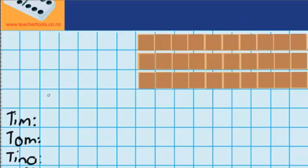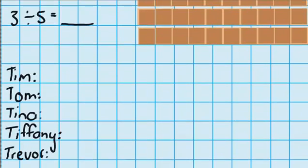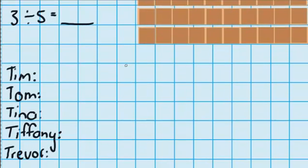Let's try another example. This time I've got 3 chocolate bars and I need to share those between 5 people. Just like last time you can see I've got my 3 chocolate bars over here and through the wrappers you can see that they're made up of 10 pieces and down here are my 5 people Tim, Tom, Tina, Tiffany and Trevor.